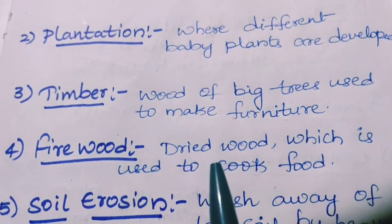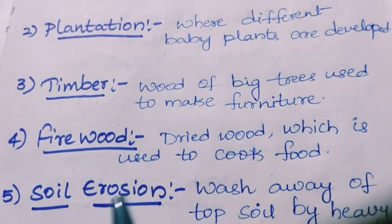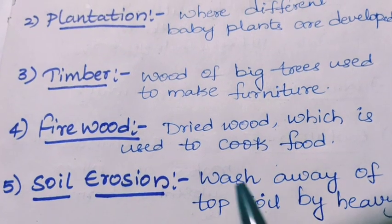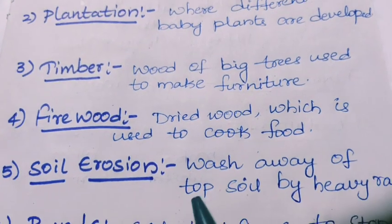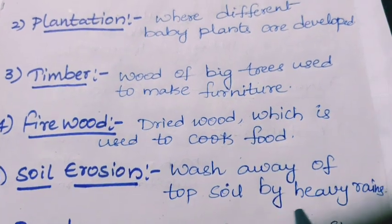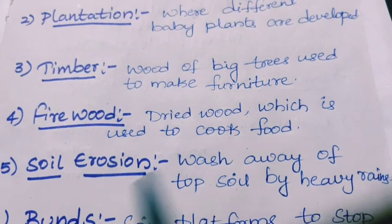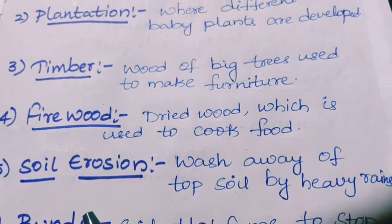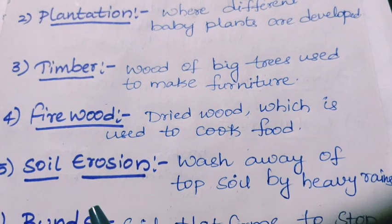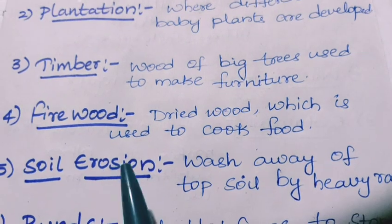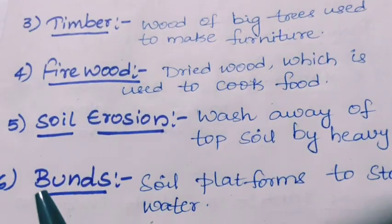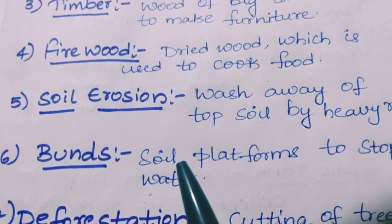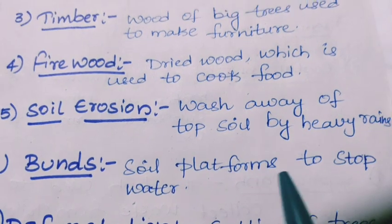Soil erosion: wash away of top soil by heavy rains. So the upper layer of the soil will be washed away due to heavy rains — it is called soil erosion. Next, bunds: bunds means soil platforms to stop water.